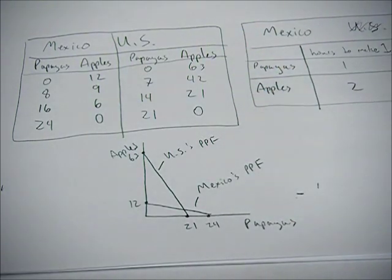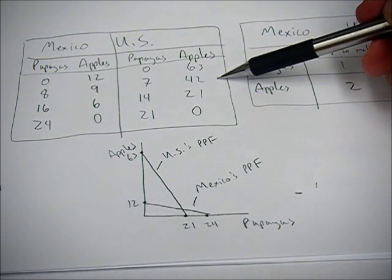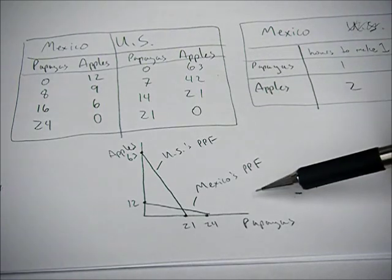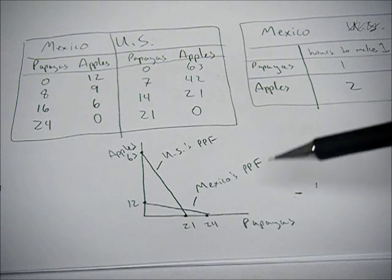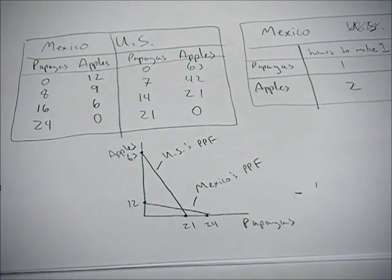So the first step is to use the information you have to make this sort of table. Make sure you understand what's going on. Draw the PPF if that helps you. And in the next video, I'll go over calculating the opportunity cost and finding which country has the comparative advantage.